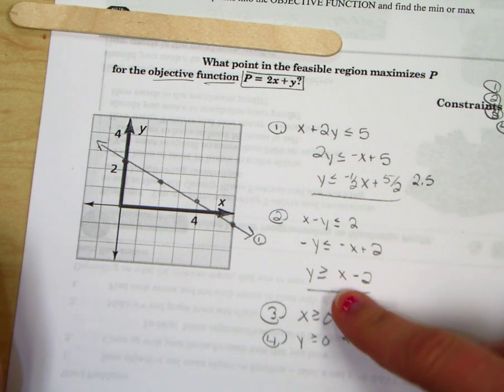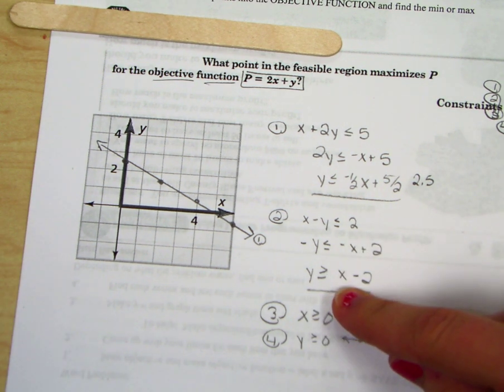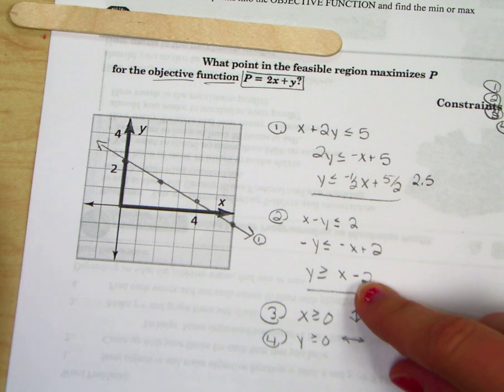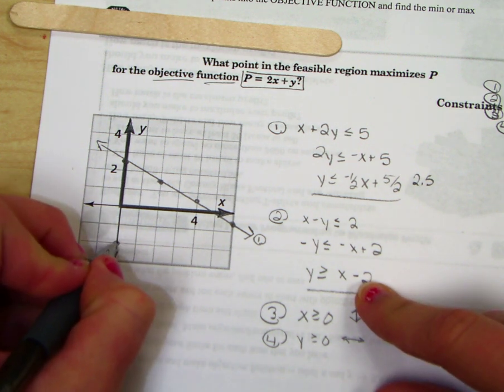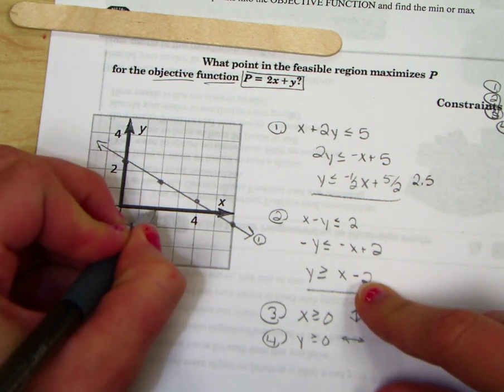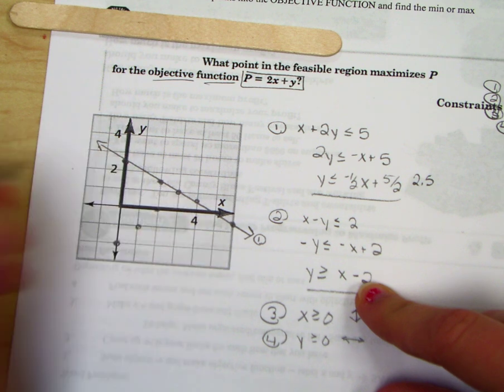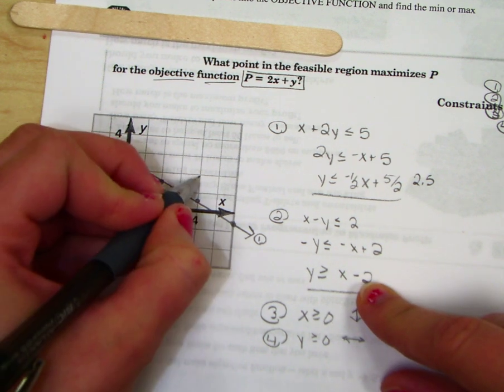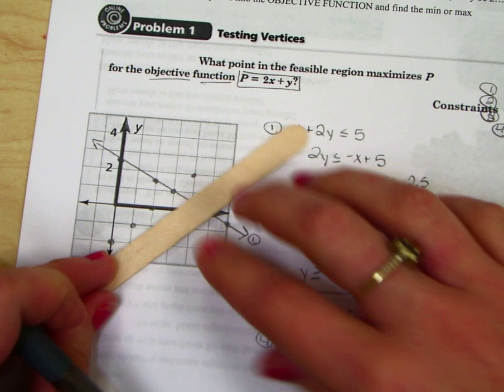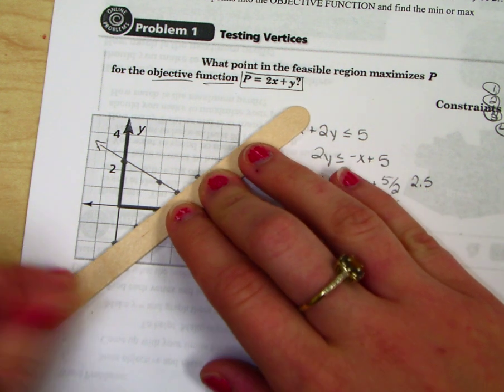That is line number 1. Line number 2. y is greater than or equal to x minus 2. I'm just going to plot my y intercept by going down 2. Then my slope is 1 over 1. Notice it does hit exactly at a dot on the other line. We're hoping that happens for the rest of the lesson today. Connect.